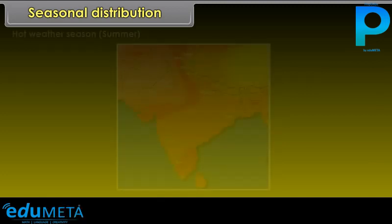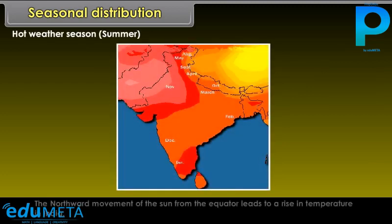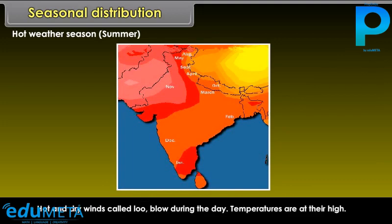In the hot weather season (summer), the northward movement of the sun from the equator leads to a rise in temperature in India. Hot and dry winds called 'loo' blow during the day, and temperatures are at their highest.